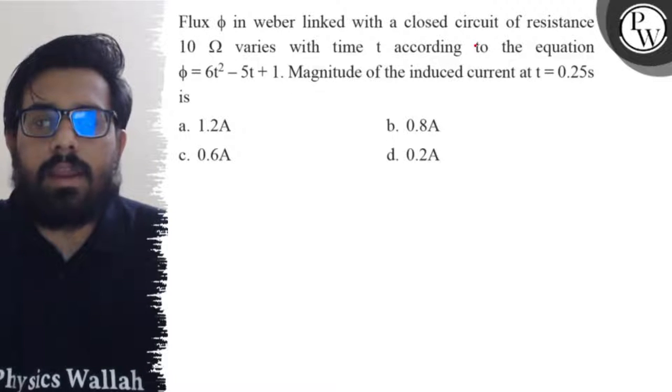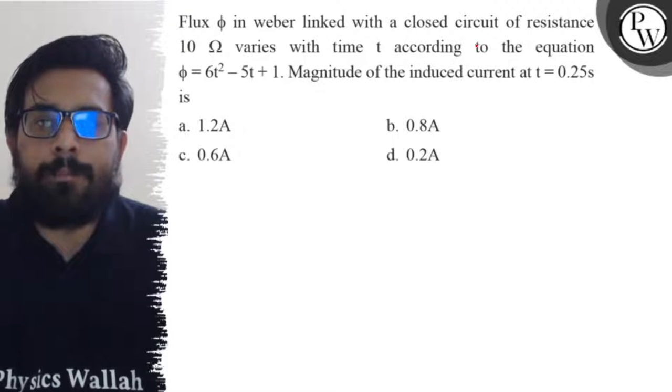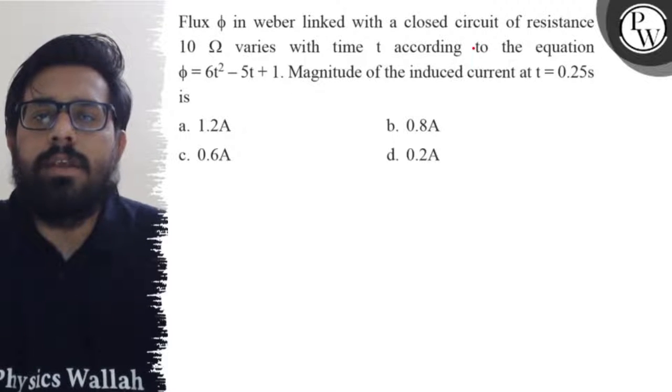Magnitude of the induced current at t = 0.25 seconds is: first option is 1.2 ampere, second option is 0.8 ampere, third option is 0.6 ampere and your fourth option is 0.2 ampere.